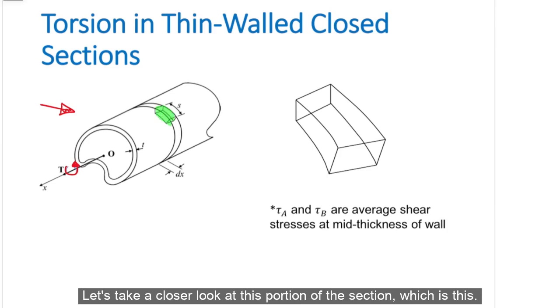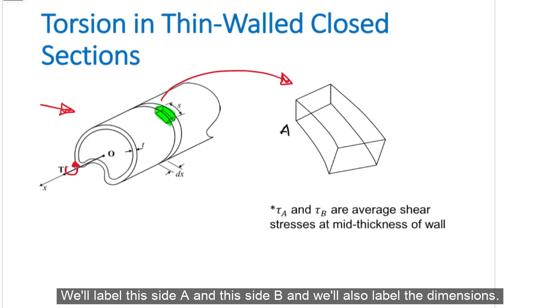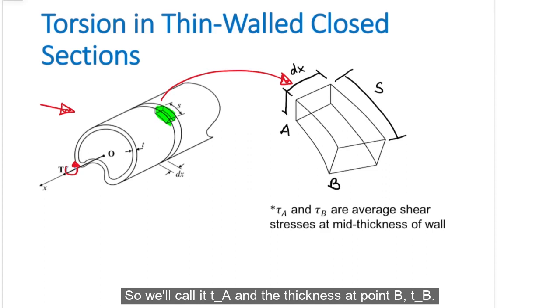Let's take a closer look at this portion of the section. We'll label this side A and this side B, and we'll also label the dimensions. At point A, we have a thickness, so we'll call it TA, and the thickness at point B, TB.